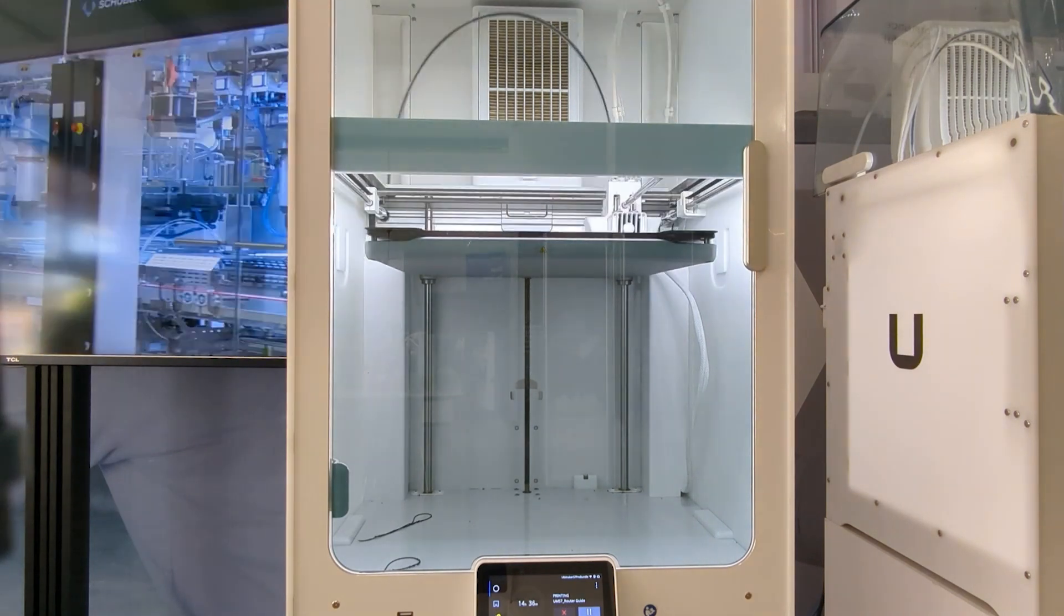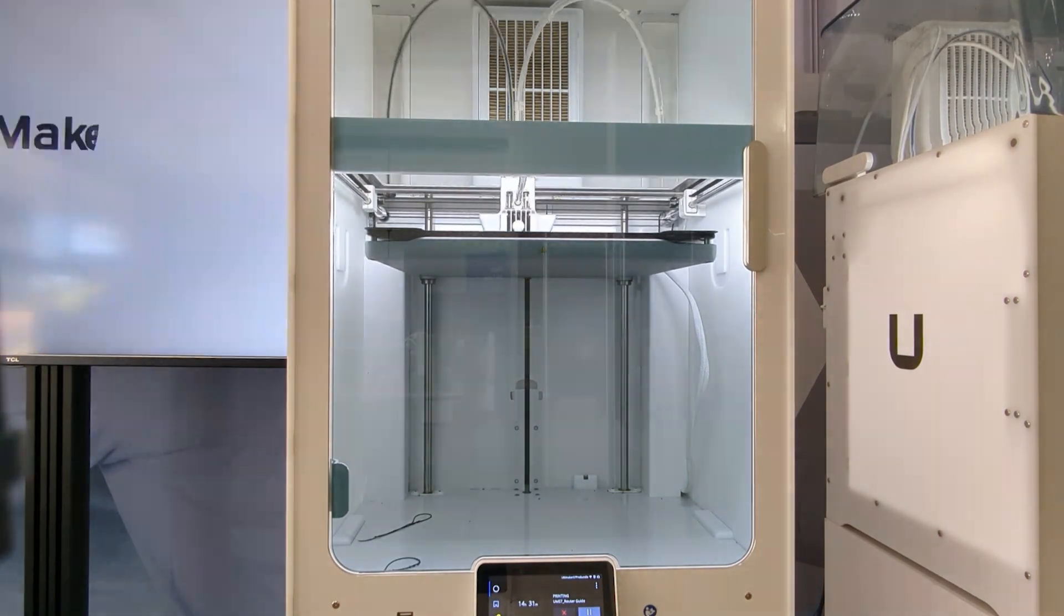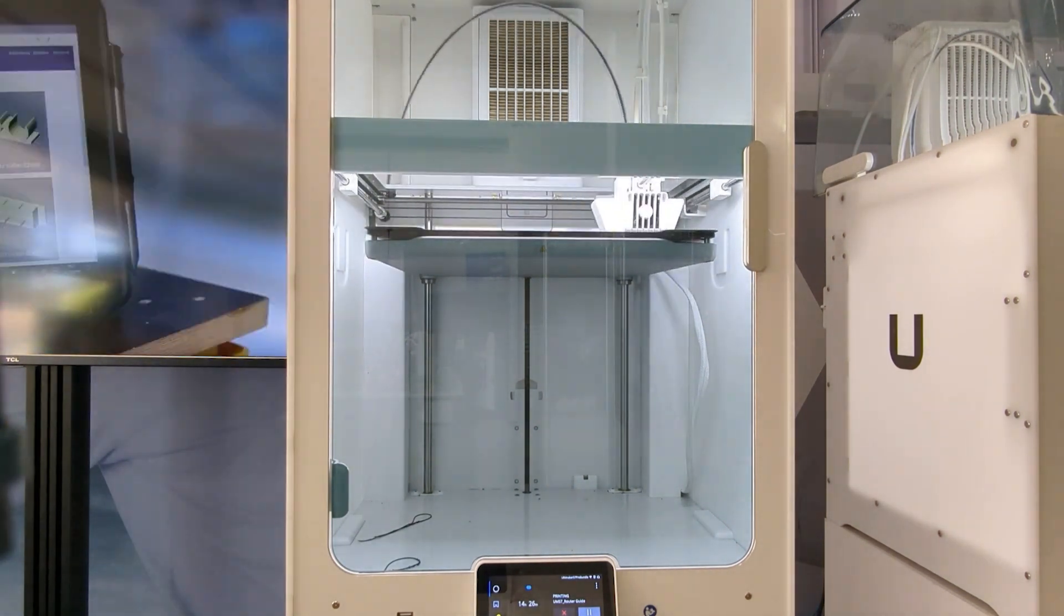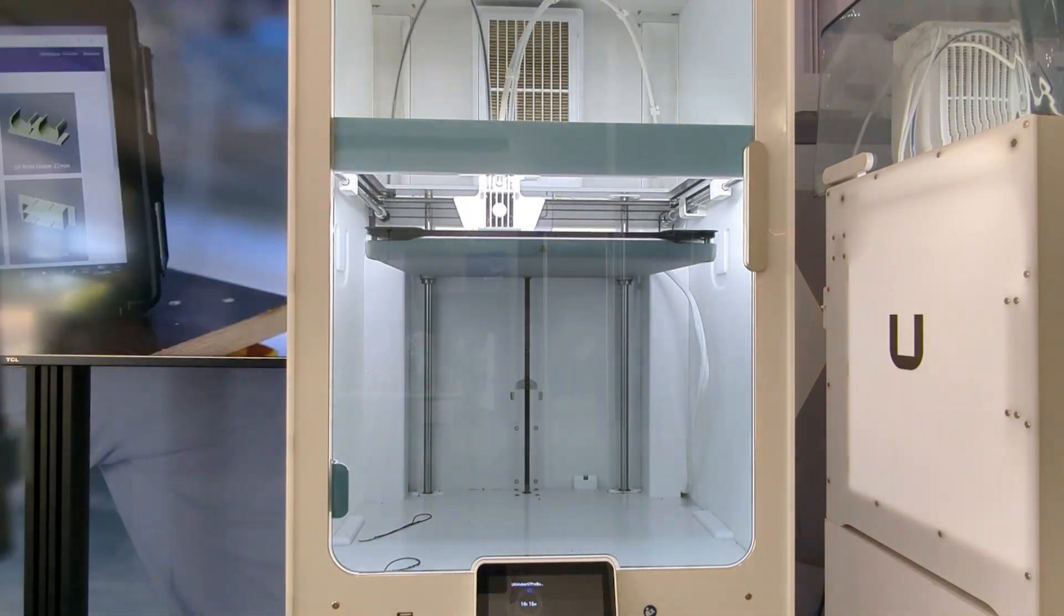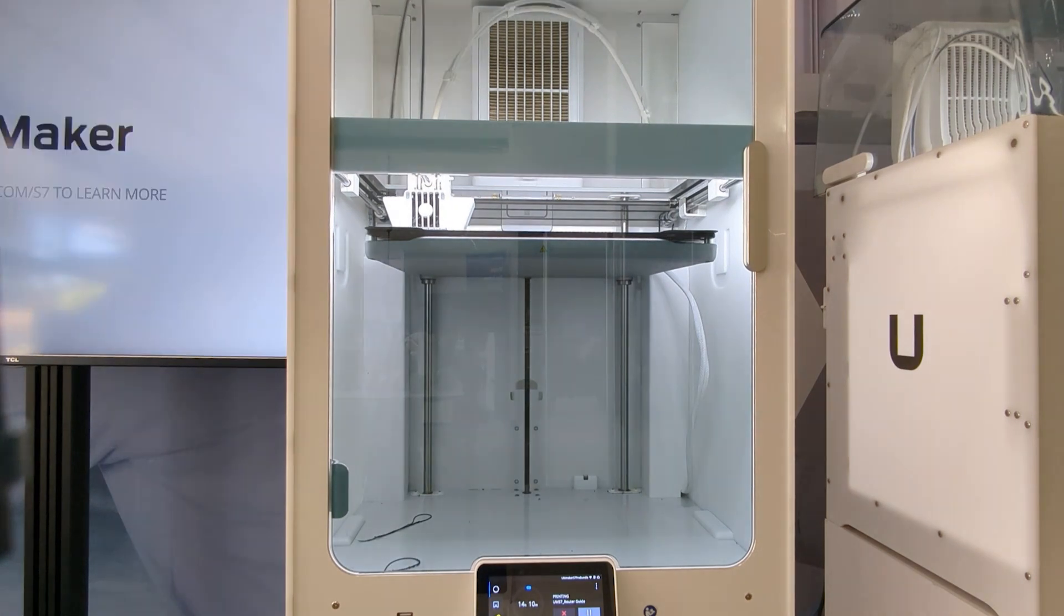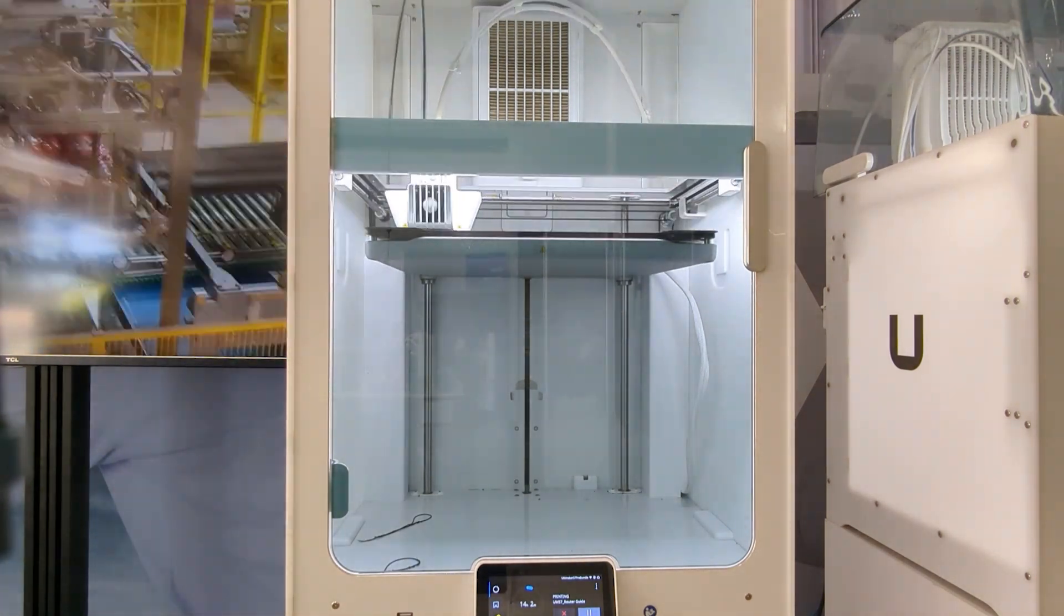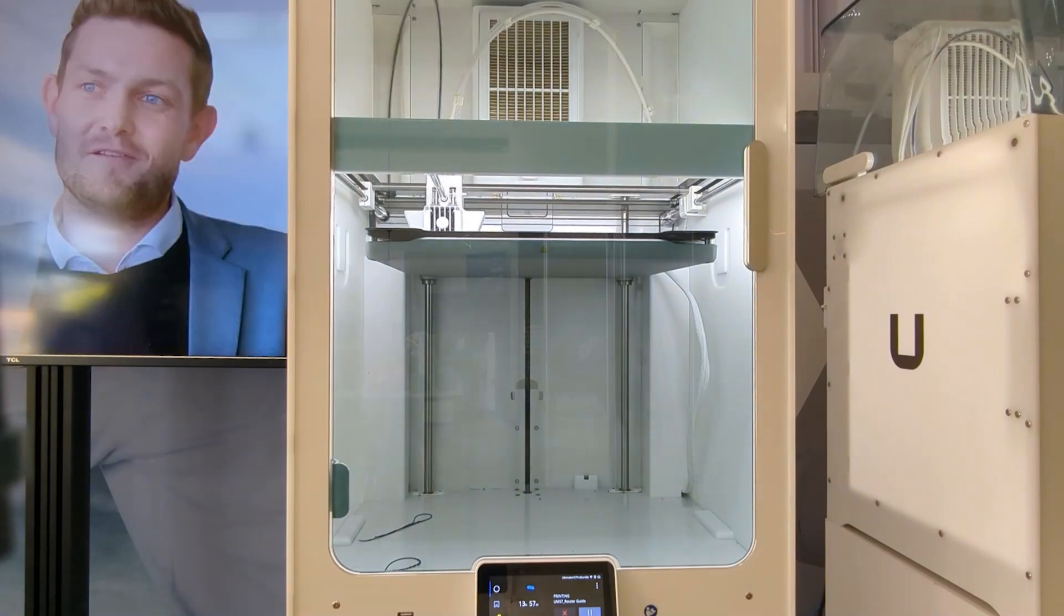The Ultimaker S7 is the latest 3D printer that has been released by Ultimaker, and it's a very easy 3D printer to use. It has automated bed leveling, so you don't have to manually level the bed.